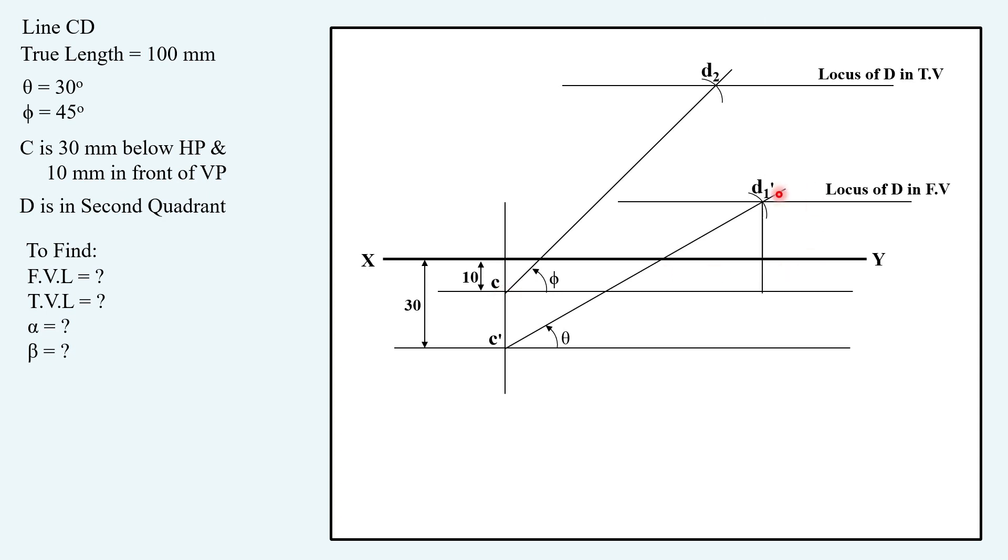Now projecting D1 dash up to opposite view, that is up to C here, and the corresponding name is D1. Keeping compass on C and radius as C D1 in your compass, drawing an arc until it meets the locus of D in top view. Corresponding name will be D2.